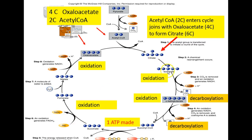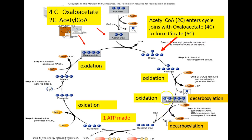Citric acid is converted to isocitrate, which quickly undergoes an oxidation and decarboxylation step, turning this six-carbon compound into a five-carbon compound by removing hydrogen atoms. The end result is alpha-ketoglutarate. Alpha-ketoglutarate is an important precursor metabolite in the formation of many amino acids.